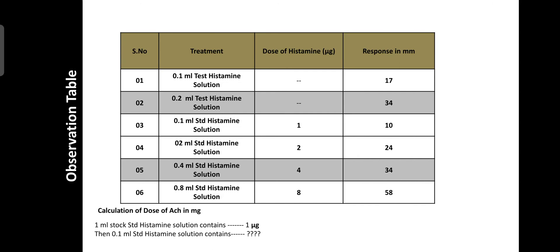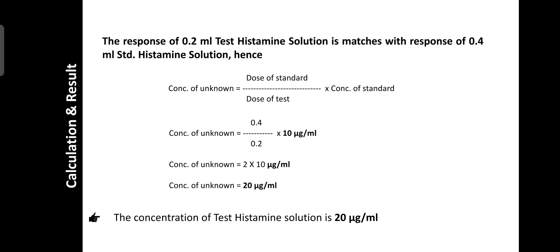In the observation table, calculate the dose of histamine in micrograms: 1 ml of stock contains 1 microgram, so 0.1 ml = 1 microgram, 0.2 ml = 2 micrograms, 0.4 ml = 4 micrograms, 0.8 ml = 8 micrograms. Since the 0.2 ml test response matches the 0.4 ml standard response, the concentration of the unknown is calculated as: dose of standard (0.4 ml) divided by dose of test (0.2 ml) multiplied by concentration of standard (10 micrograms per ml), giving 20 micrograms per ml. This is useful for determining the strength of a newly prepared histamine solution.